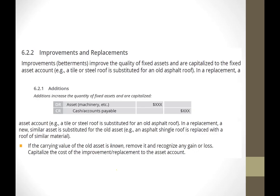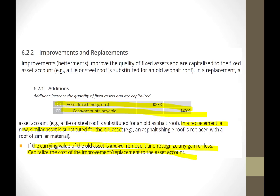When making improvements like adding a wing to a building, we debit the asset and credit cash or accounts payable — we capitalize it. If we replace an old asset with a similar new one and we know the carrying value of the old asset, we simply remove the old asset, recognize any gain or loss, and bring the new asset on the books.